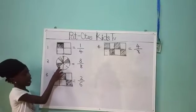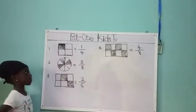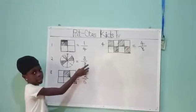1, 2, 3, 4, 5, 6, 7, 8. That's how we got this 8 here, the denominator.